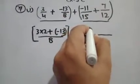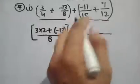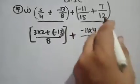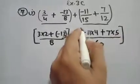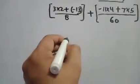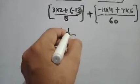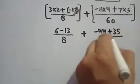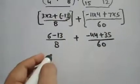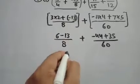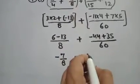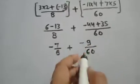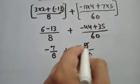Plus the LCM of 15 and 60 is 60. This becomes minus 44, 11 into 4, plus 7 into 5. Now it is 6 minus 13 plus minus 44 plus 35, all over 60. So minus 7 over 8.